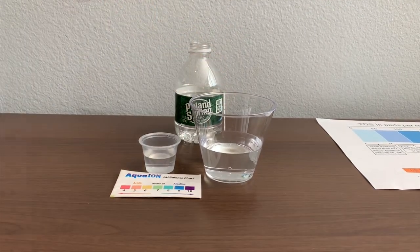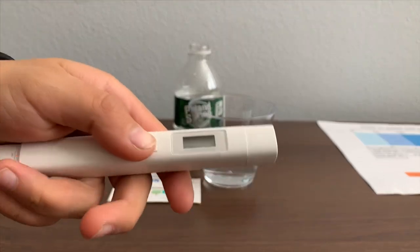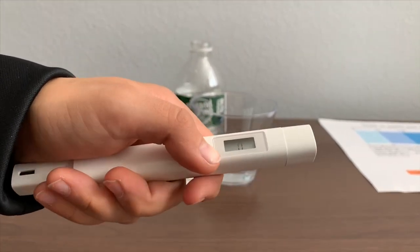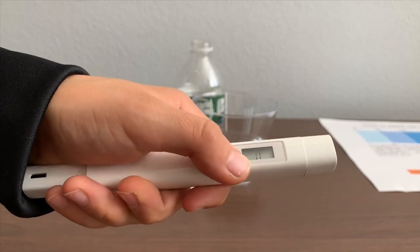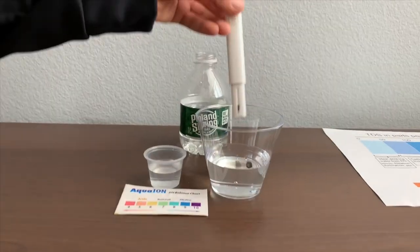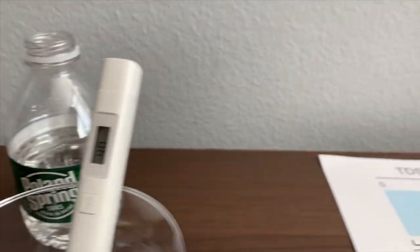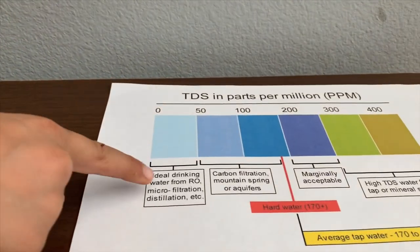First, let's test the TDS level. If you want to buy this TDS tester, check the link down below. Turn on the TDS tester, make sure it says zero, and put it in. 40. That is ideal drinking water.